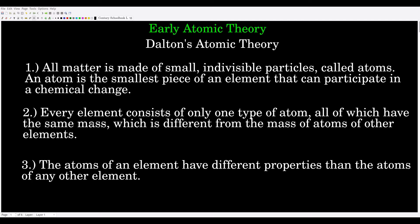Second, every element consists of only one type of atom, and all of those atoms have the same mass. This mass is different from the mass of atoms of other elements. We'll see when we start talking about isotopes that this isn't strictly true, but based on the equipment available at that time, that was the best that they could do.